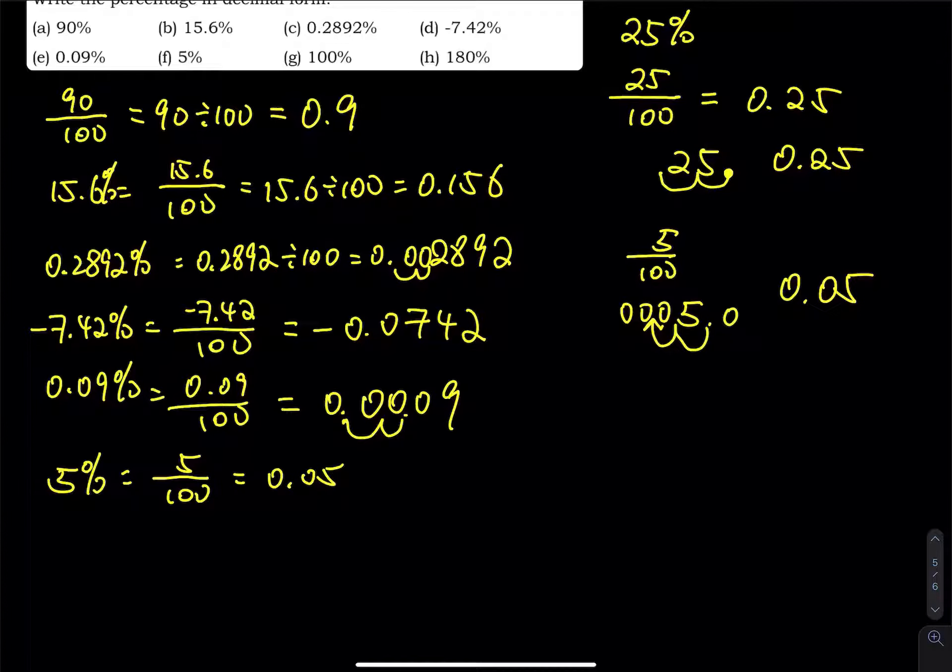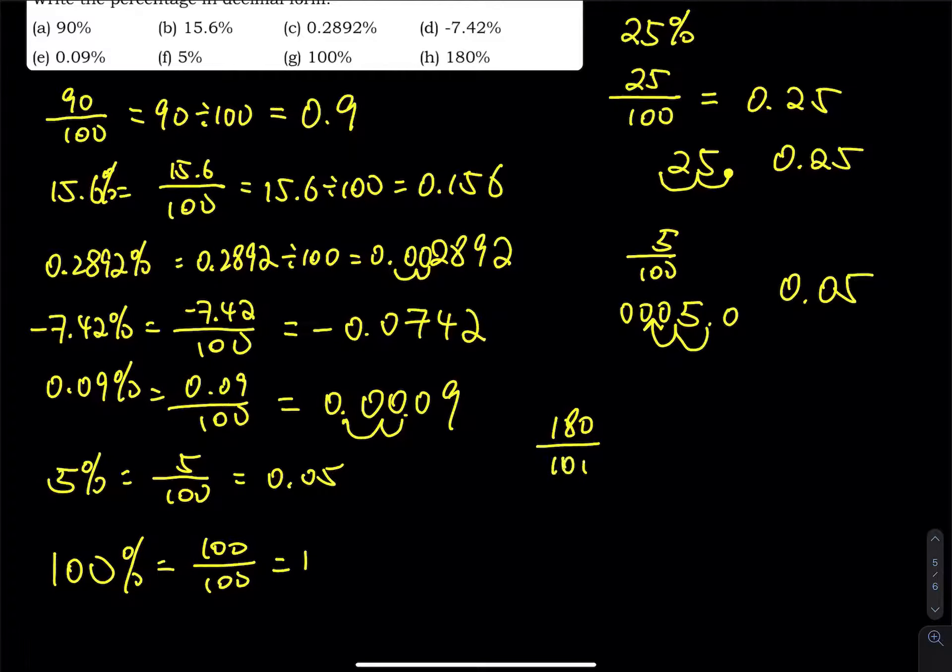And then the last one is second from last. So 100%, which is 100 divided by 100 equals 1, right? And then we have 180% divided by 100, which is the last one. So that is 1.8.